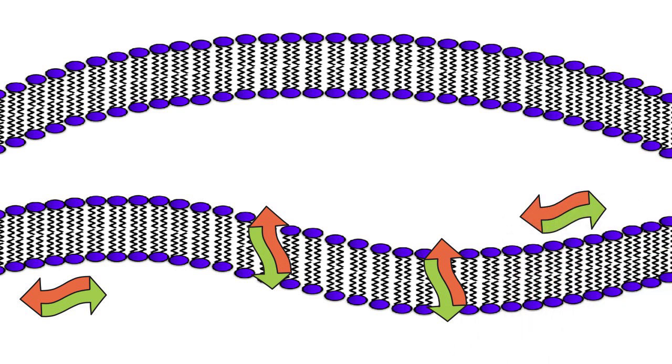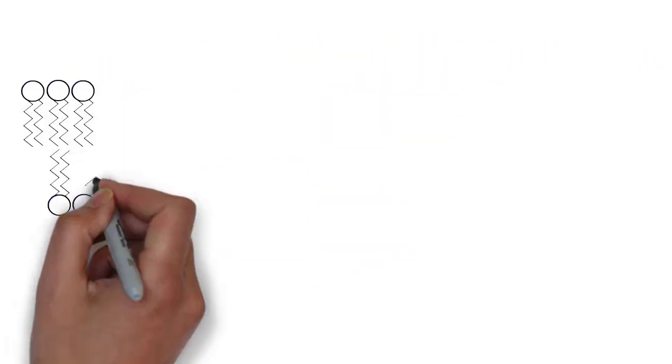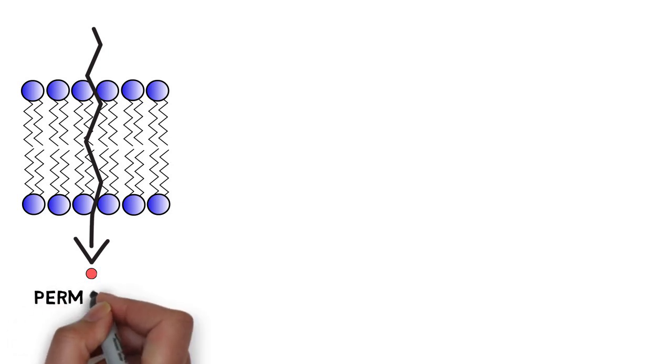This fluid and dynamic structure also imparts certain properties to the cell membrane. Small molecules like gases such as oxygen and carbon dioxide are able to slip past the tiny gaps between the phospholipid molecules, giving rise to the selective permeability of the cell membrane.